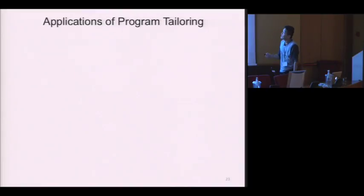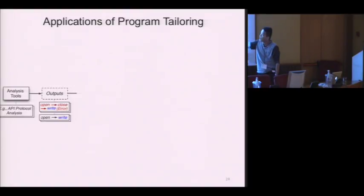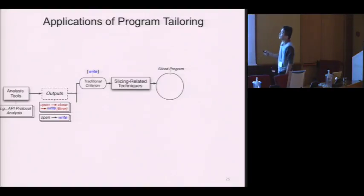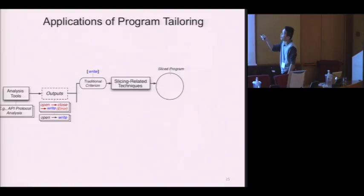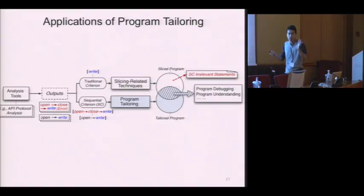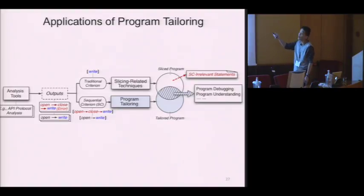The tailored program is much easier to debug because users do not need to track back through SC-irrelevant statements or semantics-irrelevant statements. After understanding this, it's easier to understand the applications of program tailoring: given a client that generates temporal sequences leading to an error statement, traditional slicing-related techniques consider only the last program point to slice the program. However, program tailoring considers the whole temporal sequences as the sequential criteria to tailor a program, which is useful to support program debugging and understanding by removing SC-irrelevant statements.